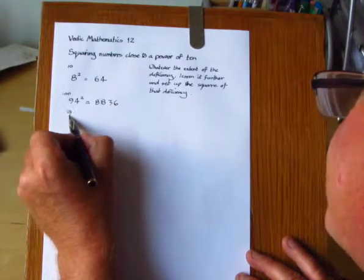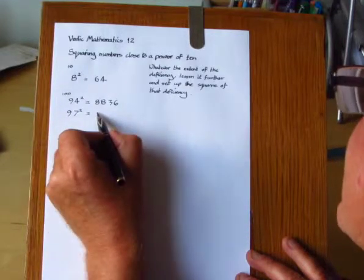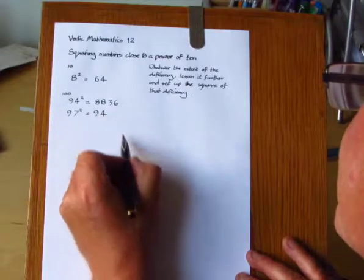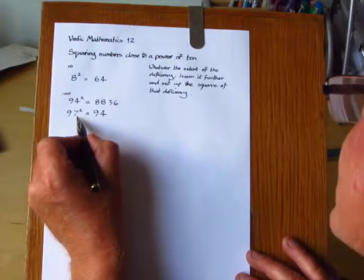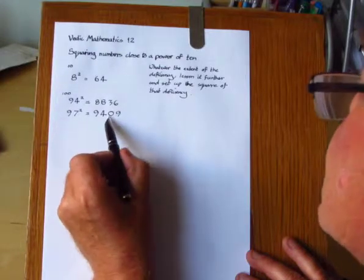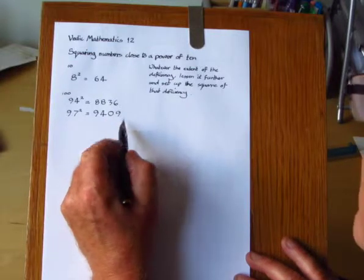Here's another example. 97 squared. The deficiency is 3. So we take 3 off the 97, leaving 94. And then put down the square of 3, which is 09. We have to remember that 2 digits are required over on the right.